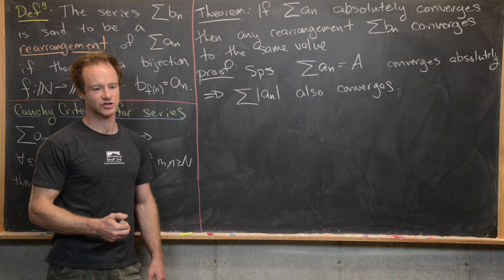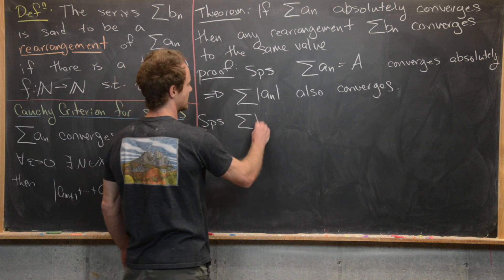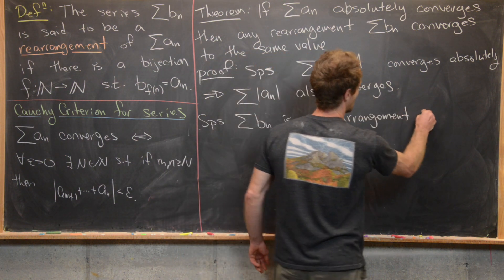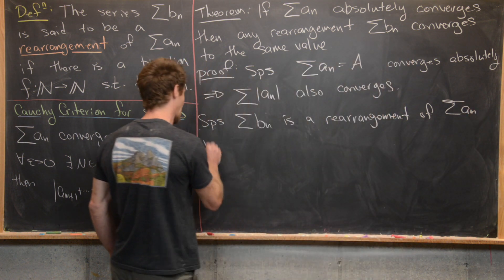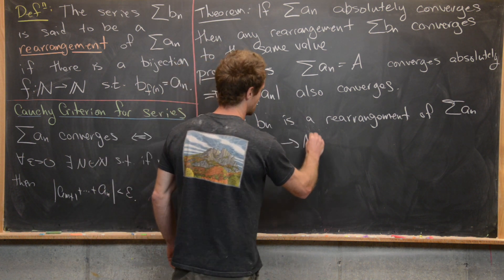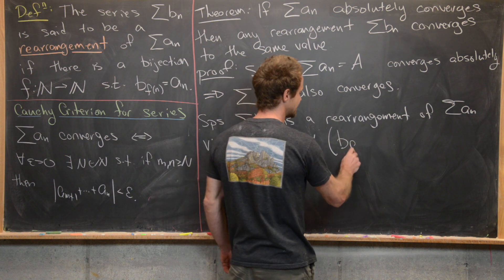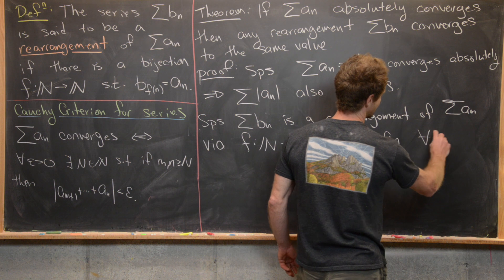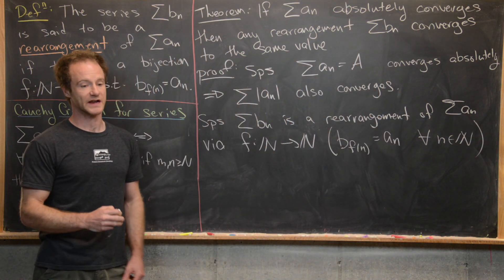We're just going to use the fact that it converges. Now suppose that the sum B_N is a rearrangement of the sum A_N via this bijection F which goes from the natural numbers to the natural numbers. In other words, B sub F(N) equals A sub N for all natural numbers N — this bijection is making our rearrangement.